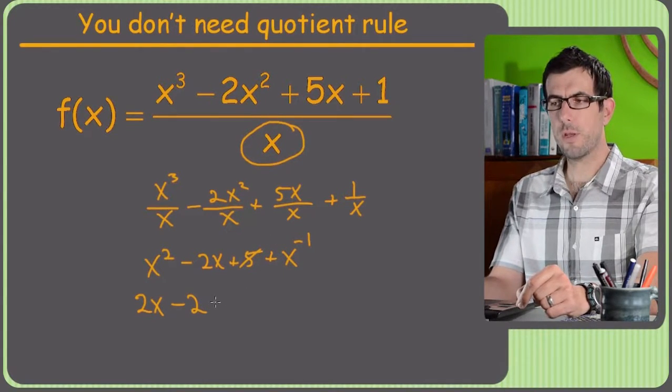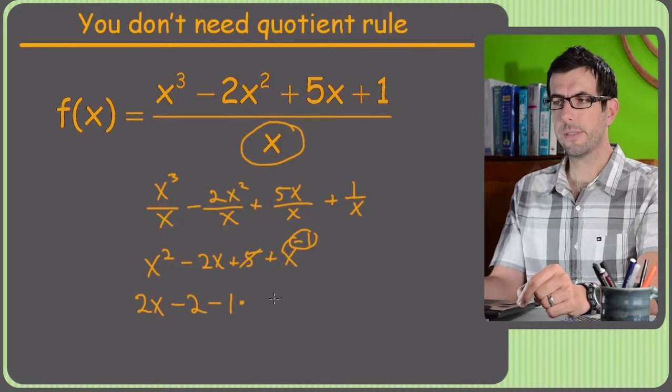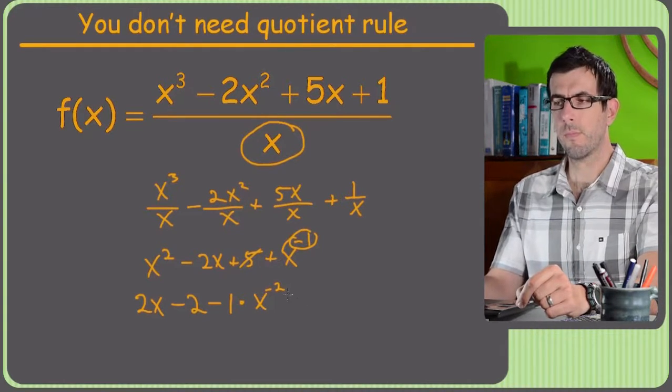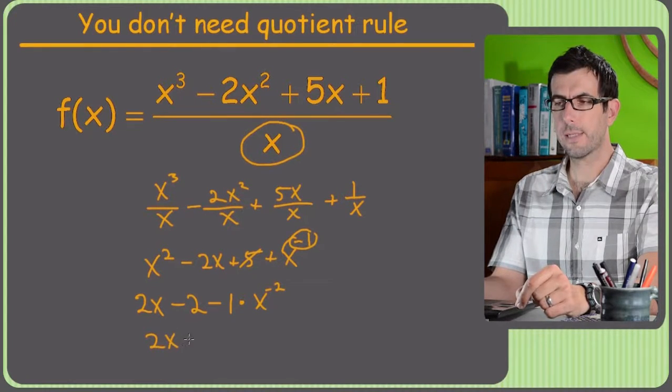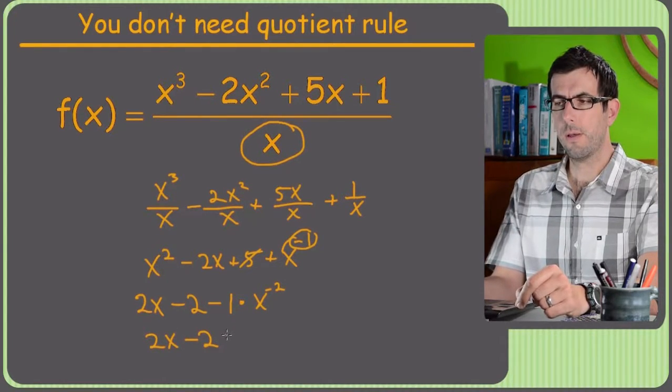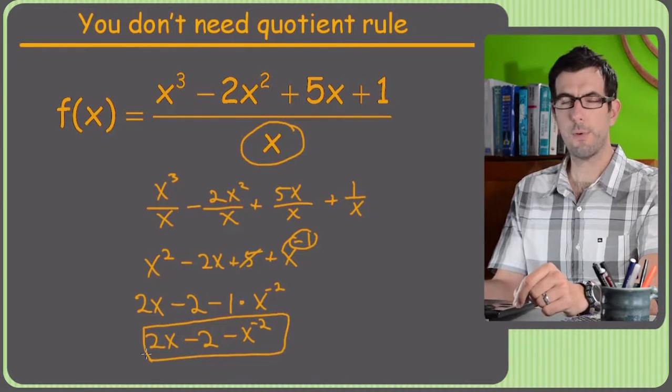And then derivative of x to negative 1 is just move the power out front. So you've got negative 1 times x to negative 2. So making this look pretty, 2x minus 2 minus x to negative 2. Alright, are we fascinated? Pretty cool, right?